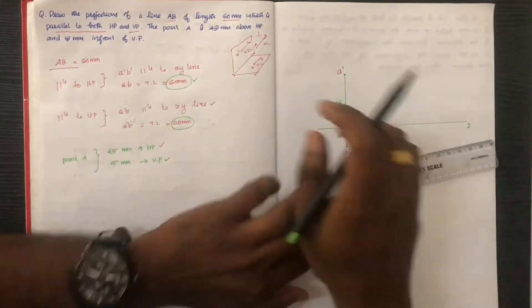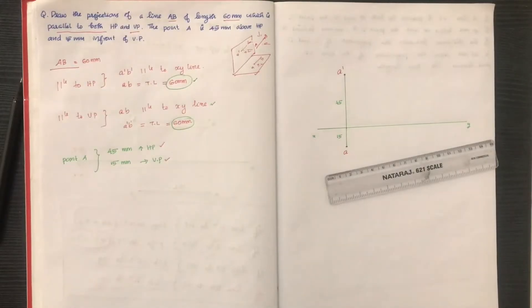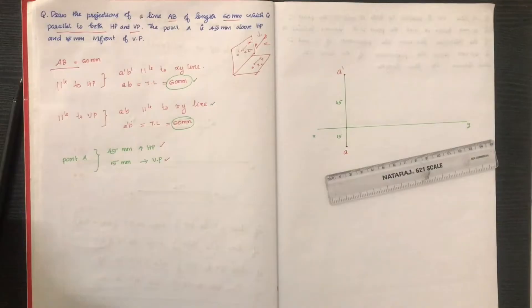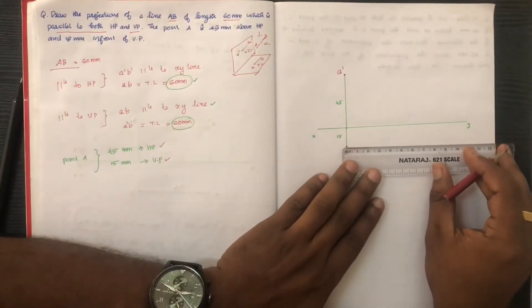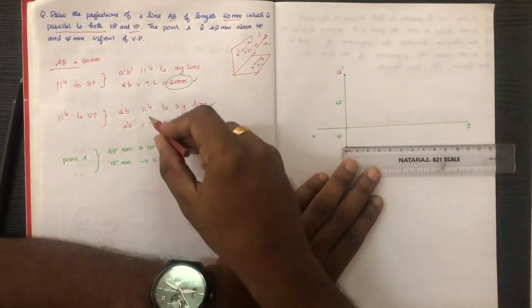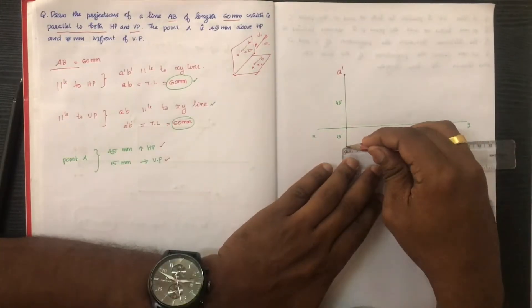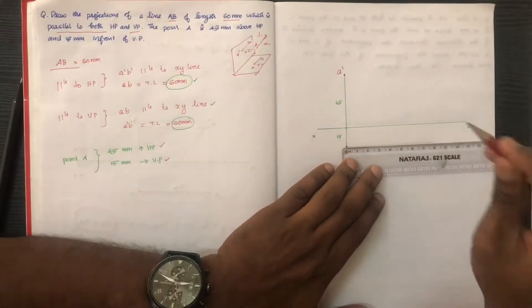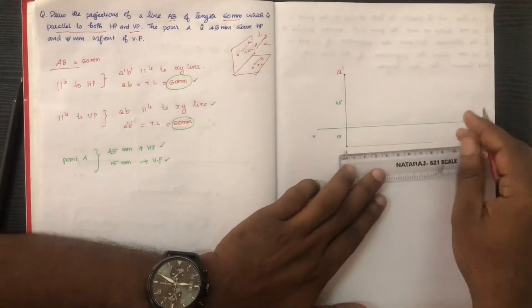AB is parallel to the XY line. These conditions correspond to AB: AB parallel to XY line, with AB equal to 60mm.